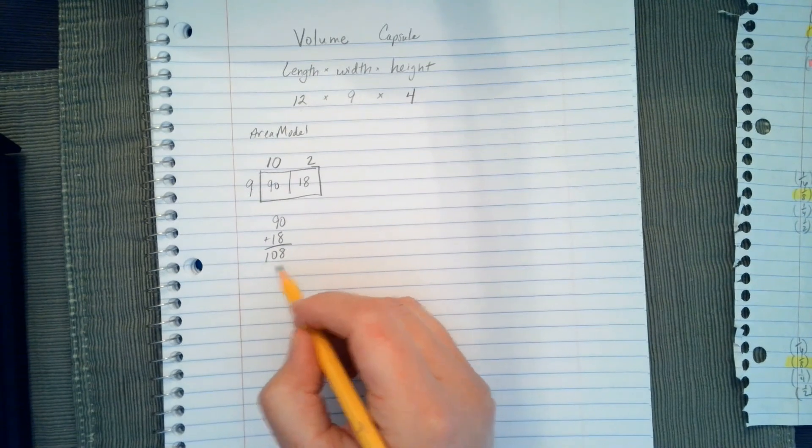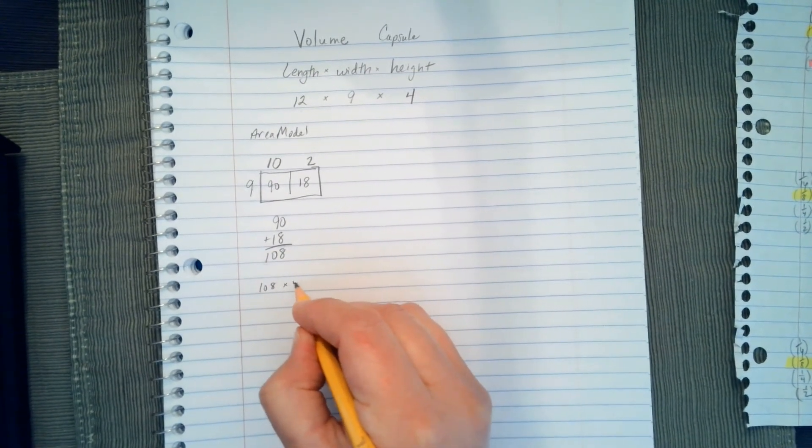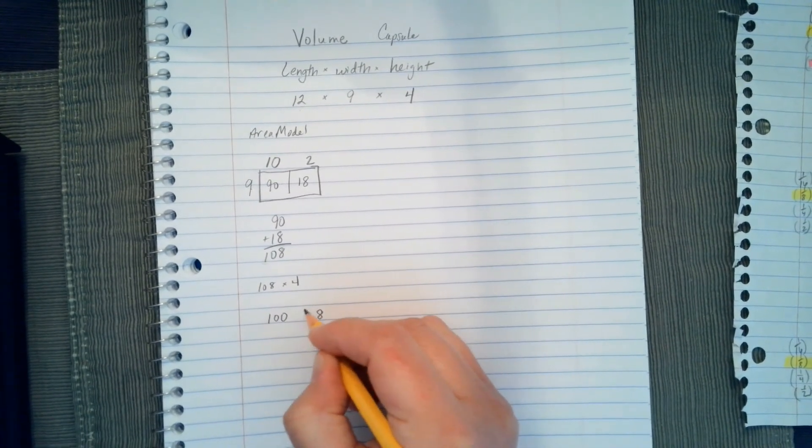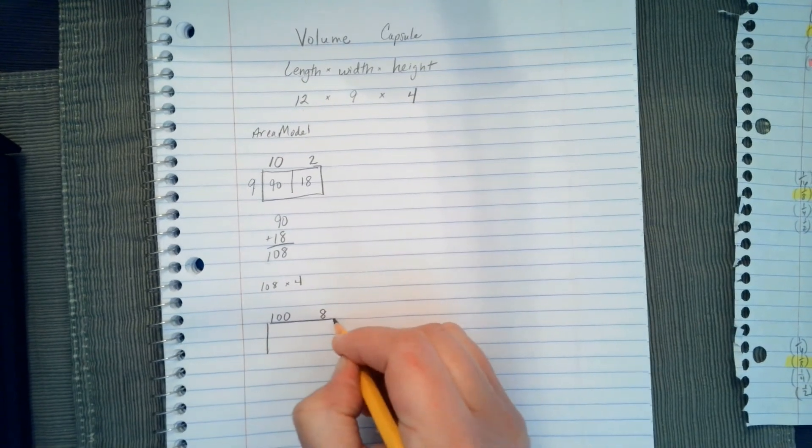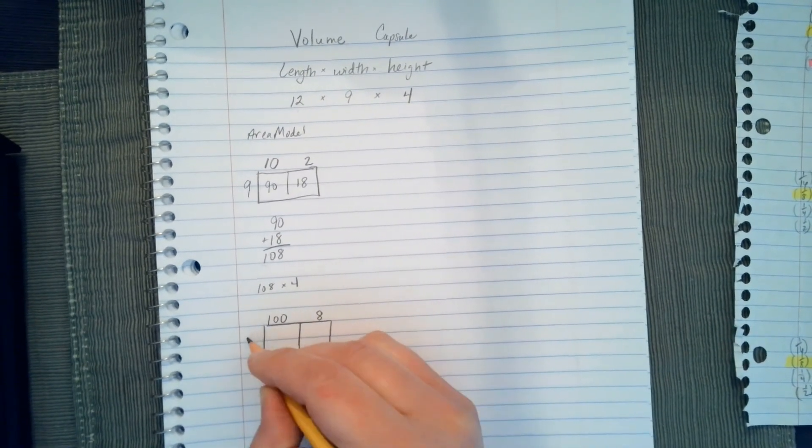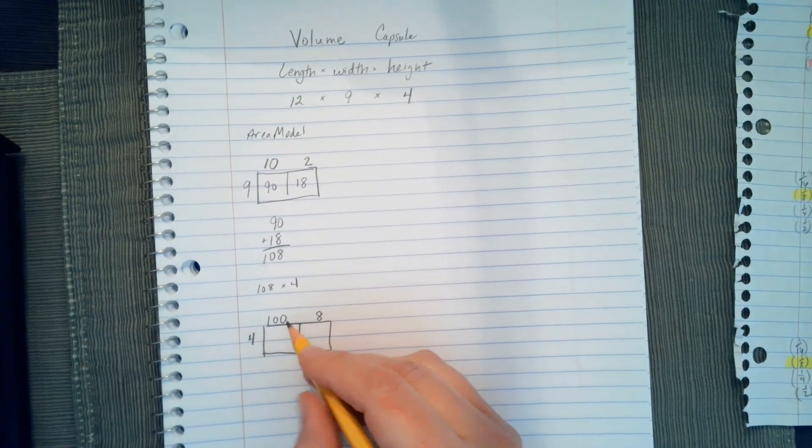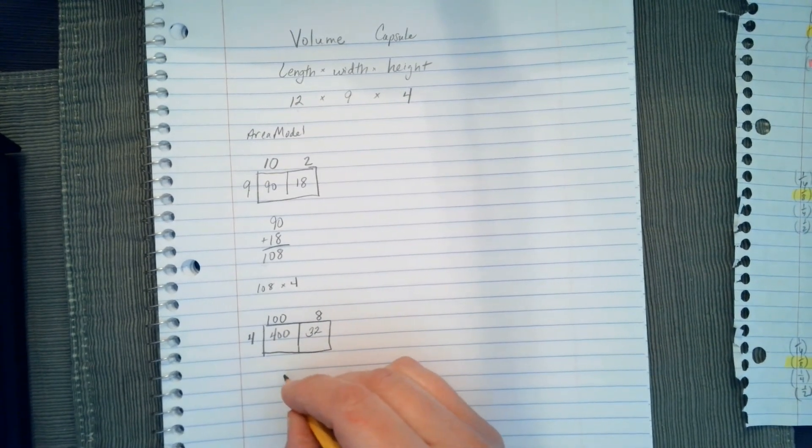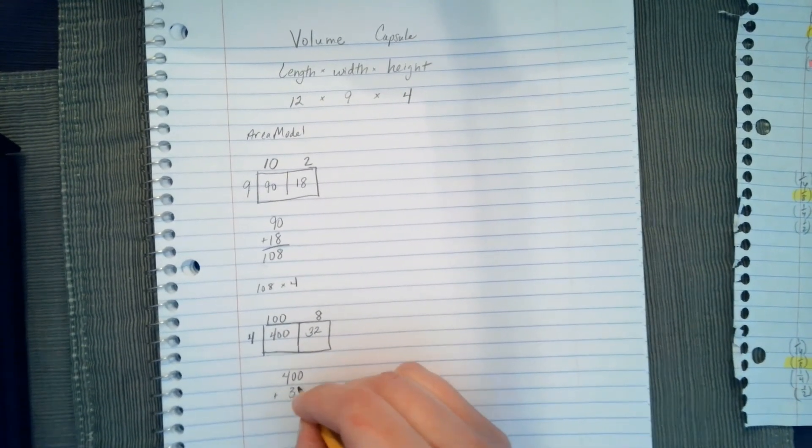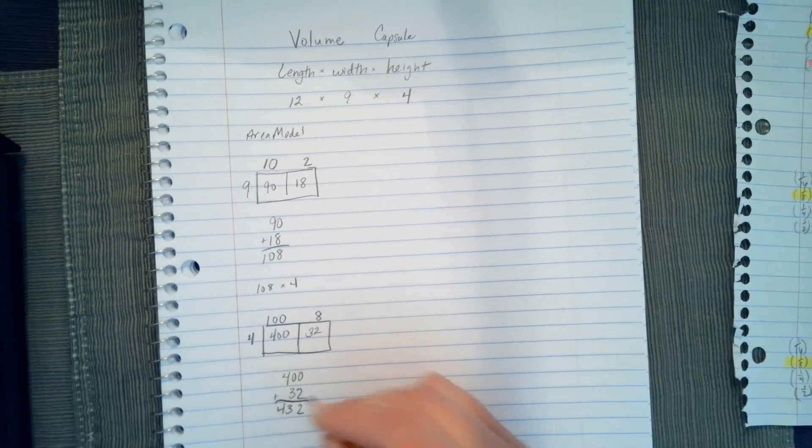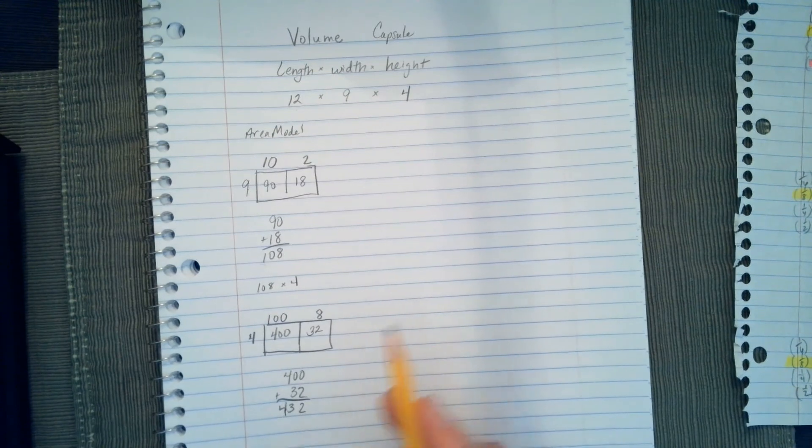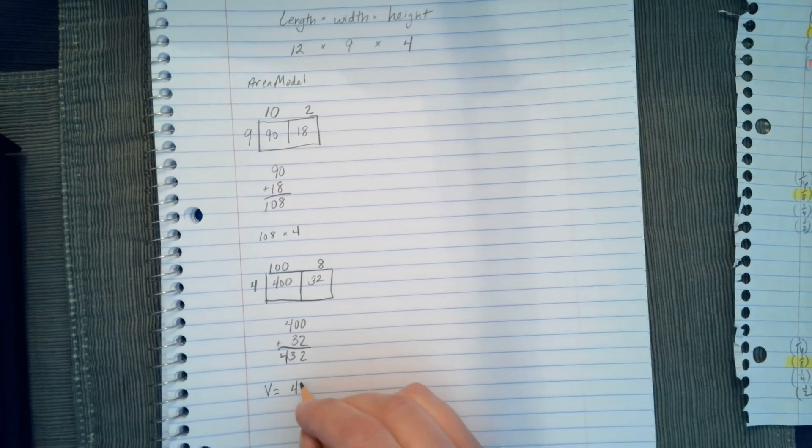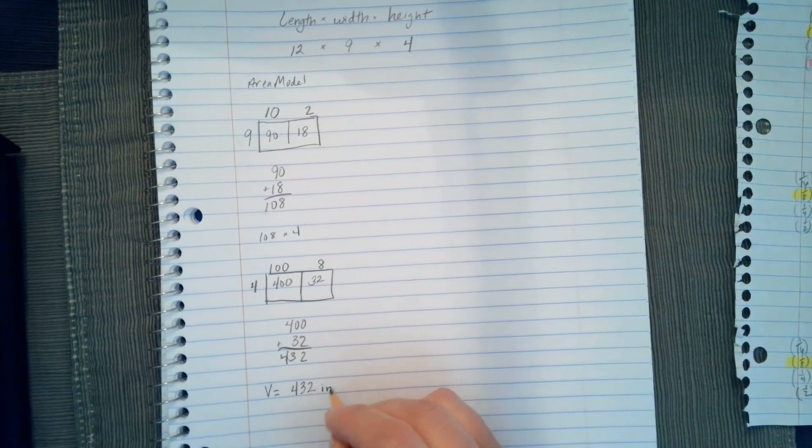So again, I'm going to show an area model. I'm going to take 108 and multiply it by 4. I'm going to split up 108 into 100 and 8, and I'm going to multiply them both by 4. So 4 times 100, 400, 4 times 8, 32. When I add them up, I get 432. The volume for my capsule will be equal to 432 inches cubed.